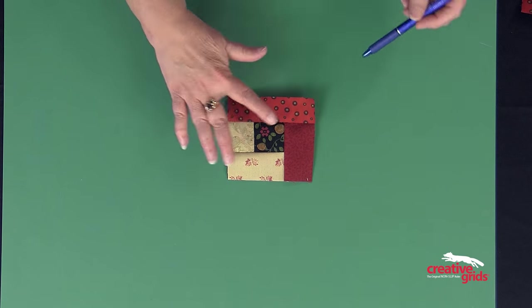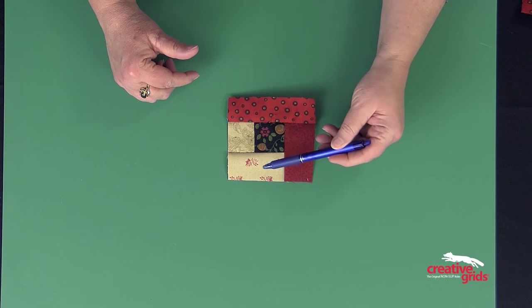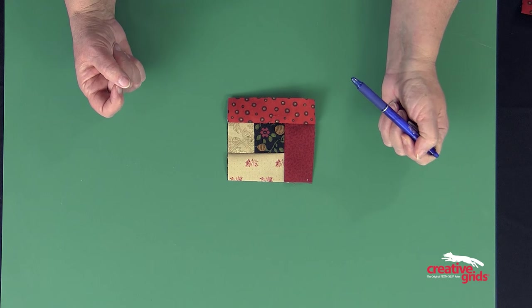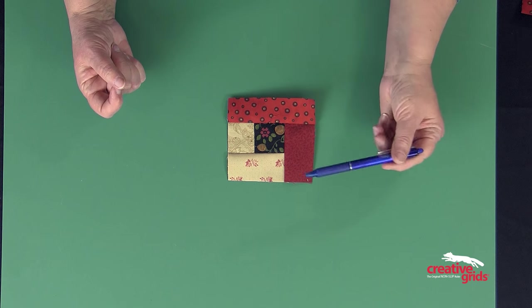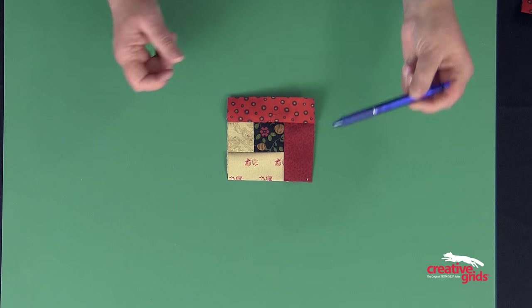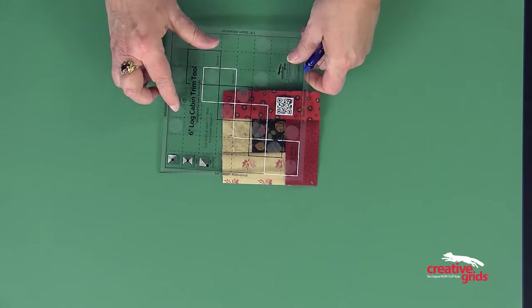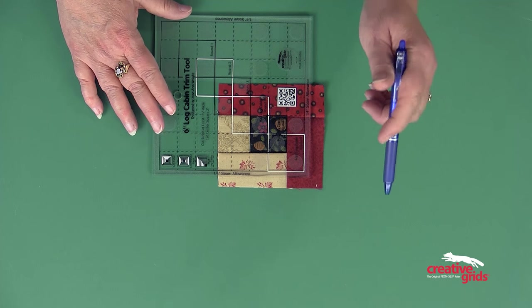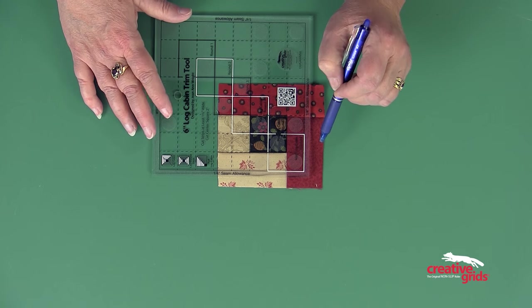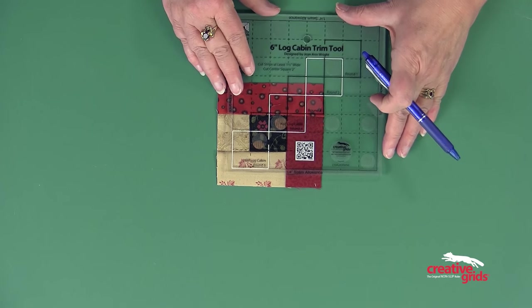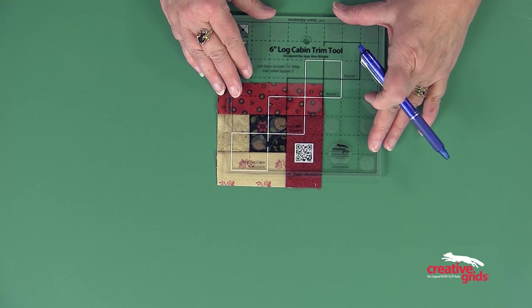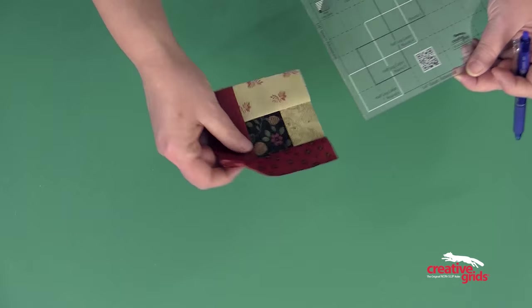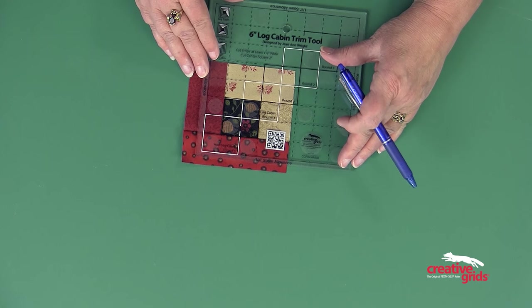A round consists of adding four logs to the center square, and whether you do it counterclockwise or clockwise, it really doesn't matter. So I have added two lights and two darks, and then I'm going to go to the black square right here, place it over the center square in my log cabin. I'm going to trim these two sides, flip the tool, and trim the other two sides.